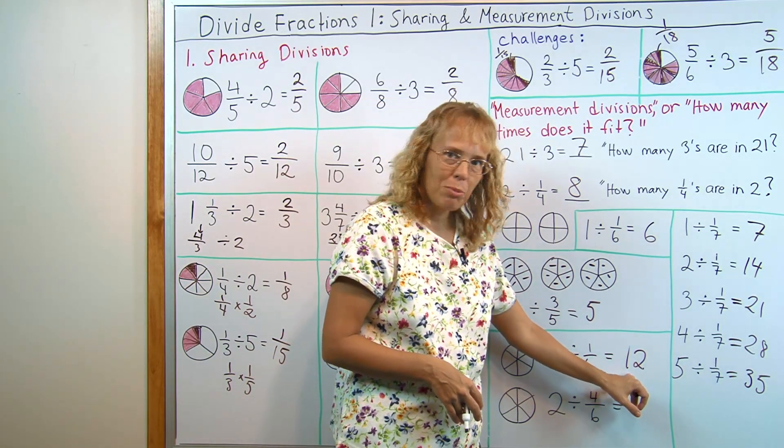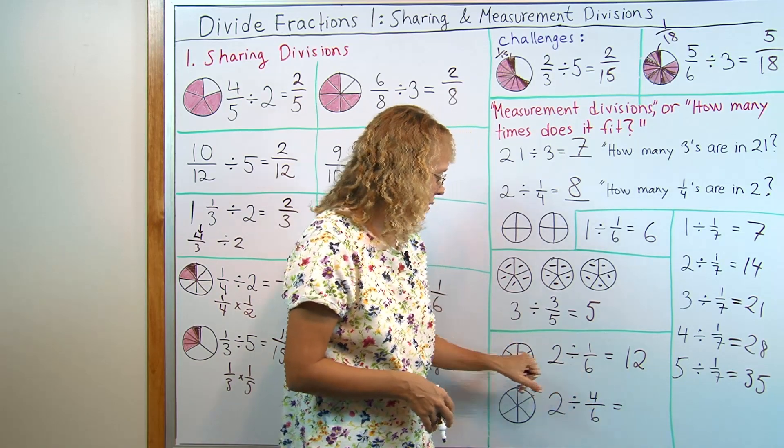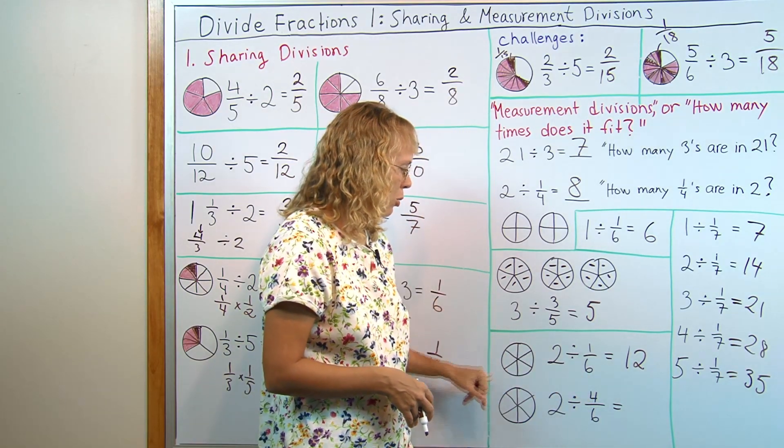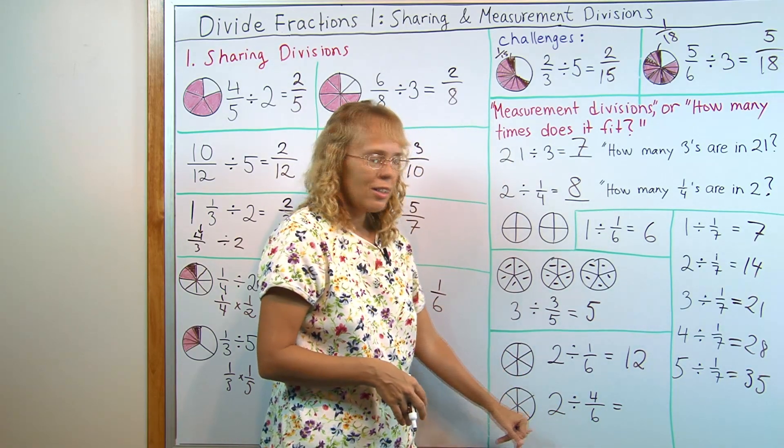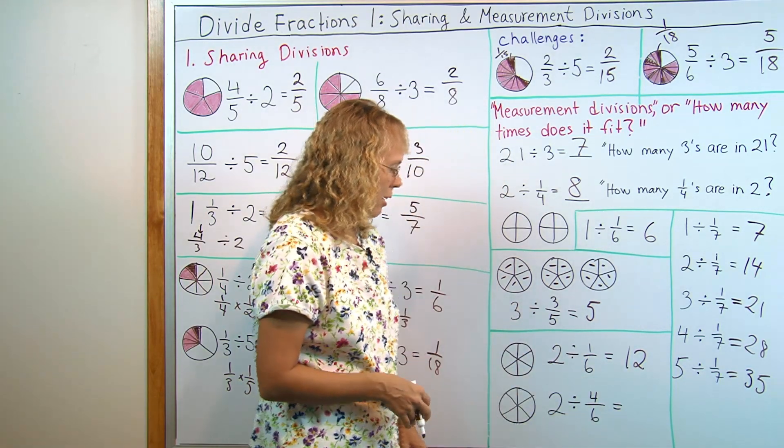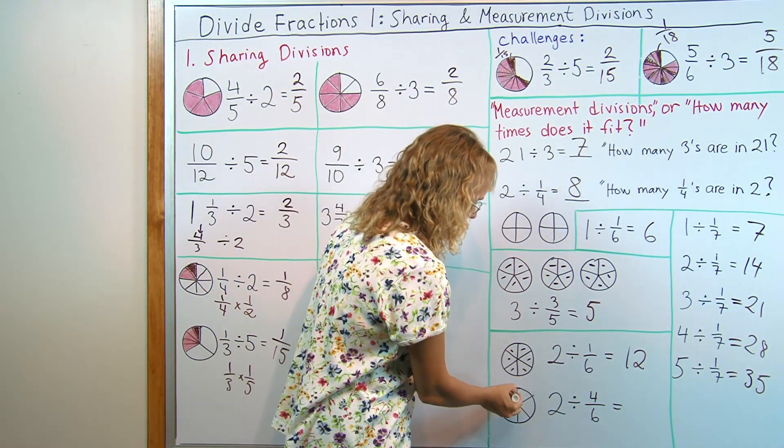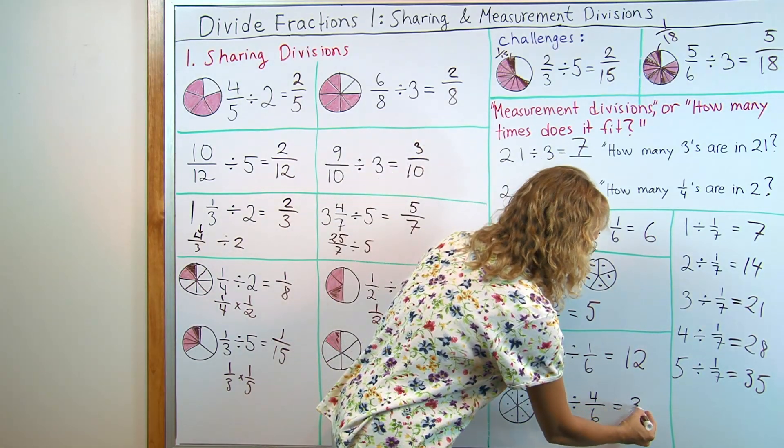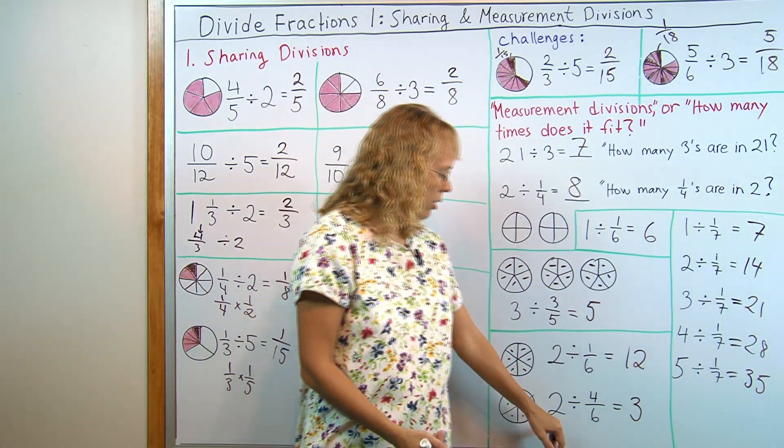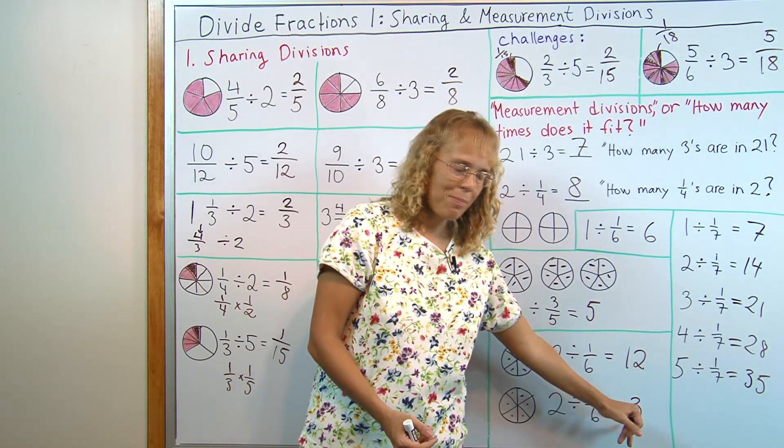If one-sixth fits into two twelve times, then four-sixths has to fit either this divided by four or three times. And I can check, counting. Here's first time four-sixths. Then second time and third time. So, yeah. Truly, the answer is three. It is kind of like going two times six, you get twelve, and then you divide by four, which is three.